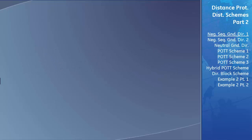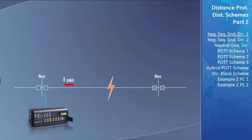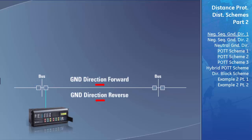When a fault occurs on a transmission line, currents flow to ground. Measuring the direction of the ground current flow is used to assist some pilot-aided distance protection schemes in determining if the fault and the source of the ground current are located on their transmission lines. The ground-directional overcurrent elements let the pilot-aided schemes know if the ground current rises above a minimum set level and, if it does, what direction the ground current is flowing.